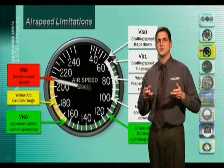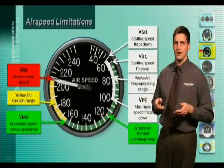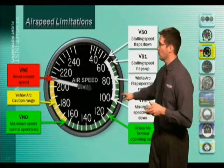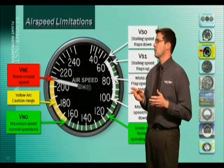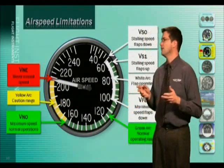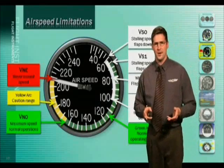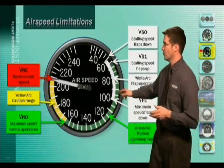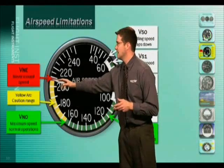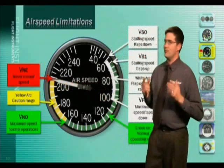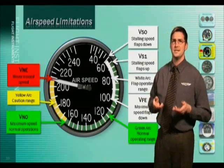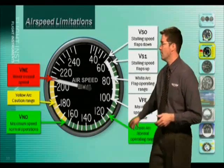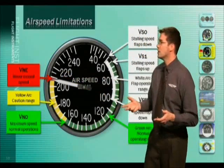If the air gets bumpy, reduce your speed to a speed within the green arc. The yellow arc represents the caution range. Operating at airspeeds in this range requires caution, and you should only fly at these speeds in smooth air. At the very top of the yellow arc is a red line — we call this red line VNE. The V stands for velocity, N is for never, and E is for exceed, which means never exceed speeds above this red line. If you do, you risk structural damage to the airplane.